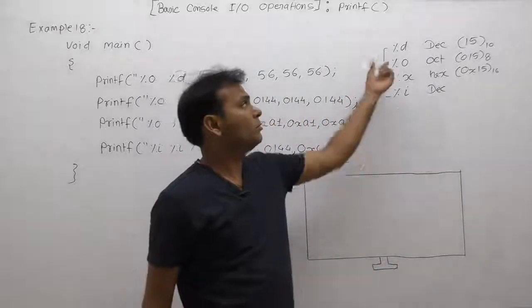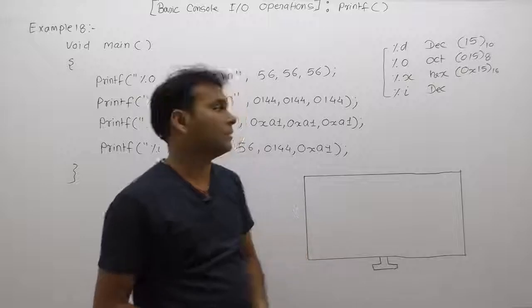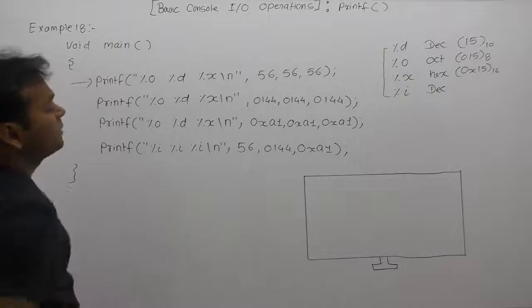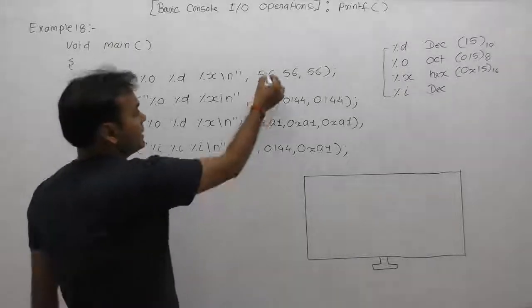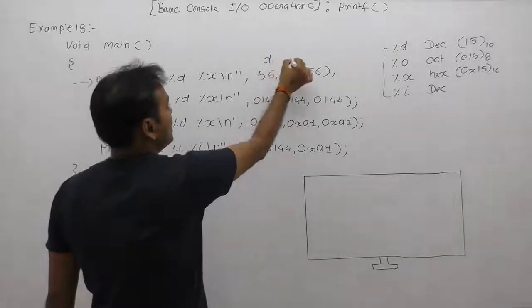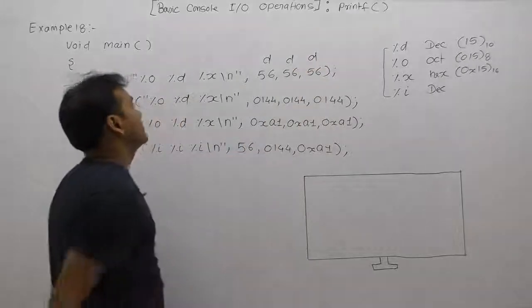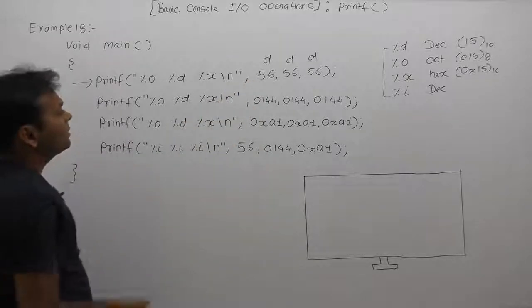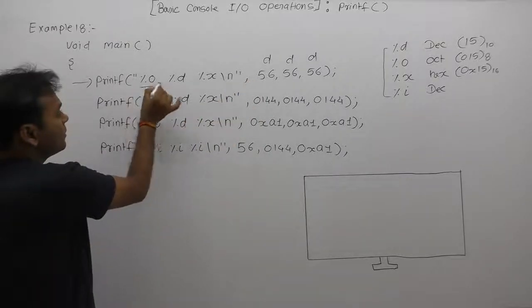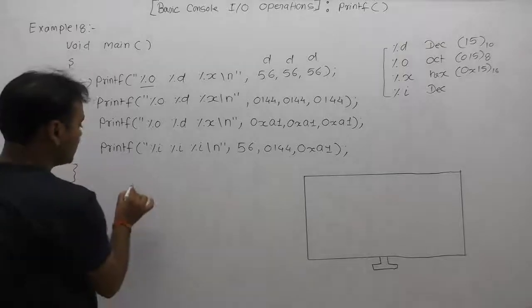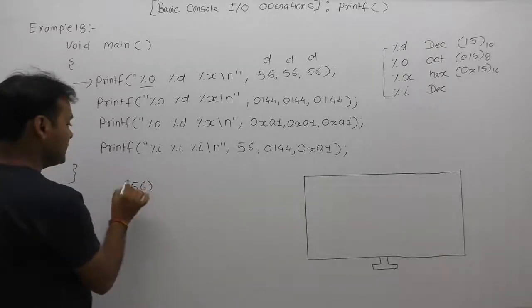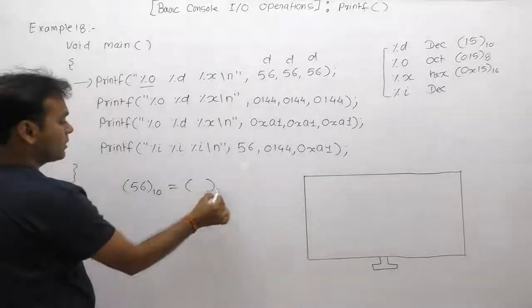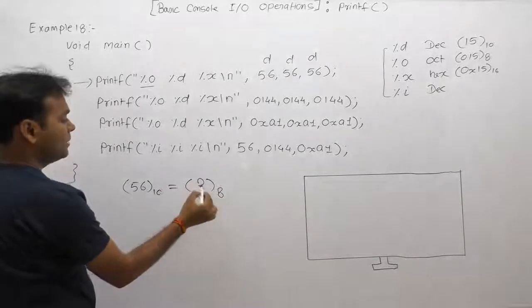Because %i is almost similar to %d, what is the result in this case? In the first printf, we are supplying 56. The default representation of 56 is decimal. In the first case, the given type is decimal number system. For %o, 56 must be converted into octal number system.